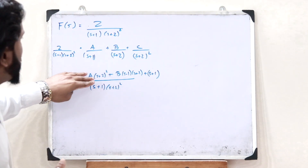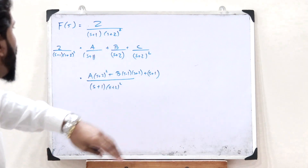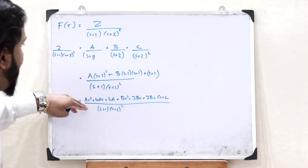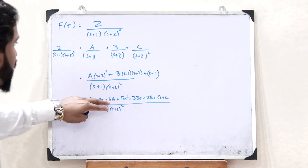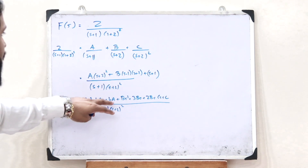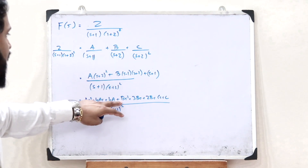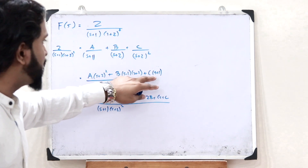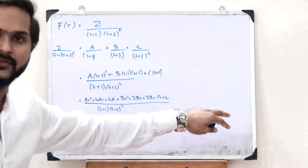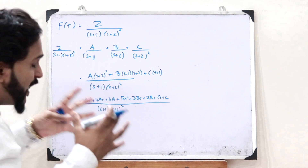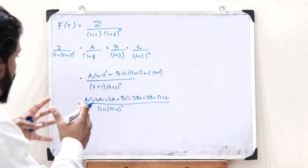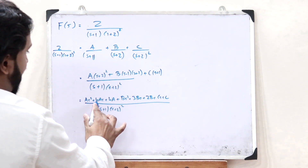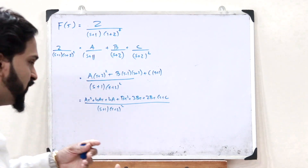Upon expanding: A(s+2)² gives As² + 4As + 4A; B(s+1)(s+2) gives Bs² + 3Bs + 2B; and C(s+1) gives Cs + C. Next, we group the s² components, the s components, and the constants together.